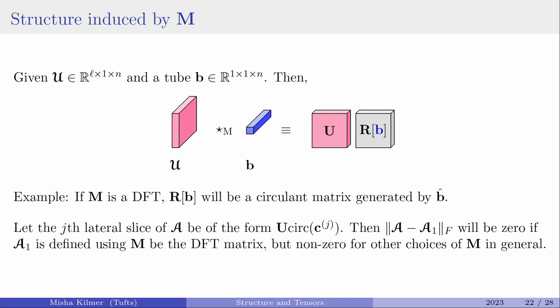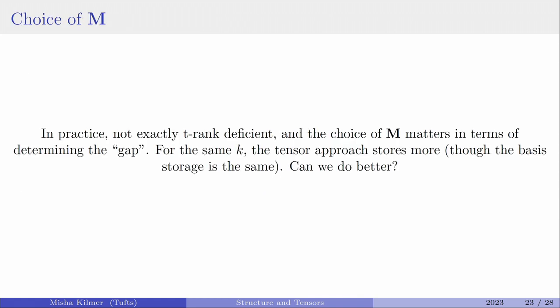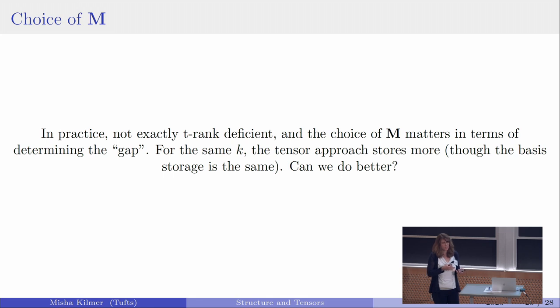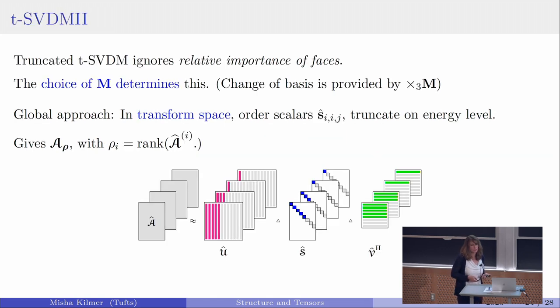If your tensor has circulant structure in its lateral slices, a single term of this approximation captures it immediately, while other choices of M would miss it entirely. In practice of course things are not this clean, and we need real compression. We don't have a good way of quantifying the size of the strict inequality when it exists, and the tensor approximation is not as compressible as the matrix one for the same k.